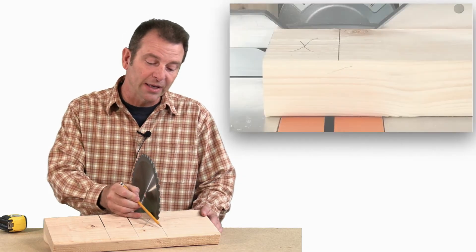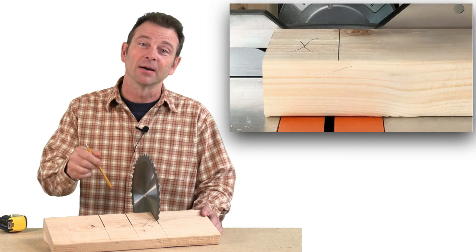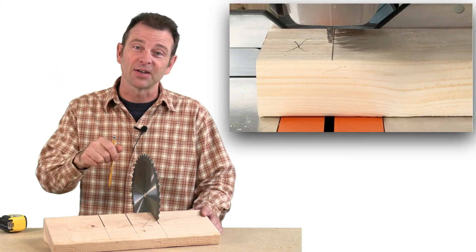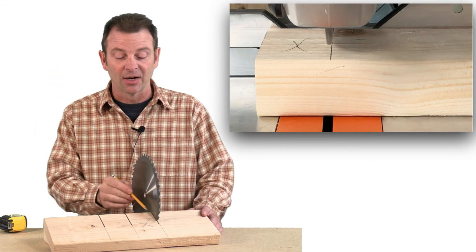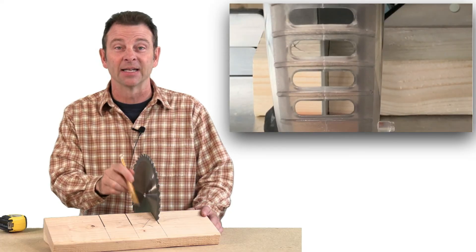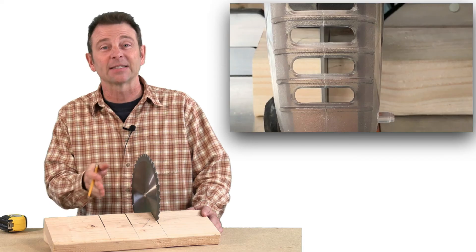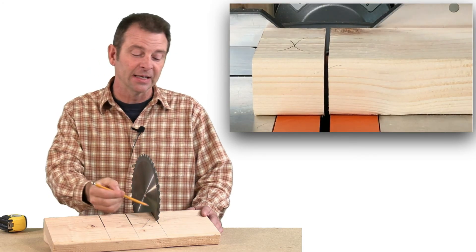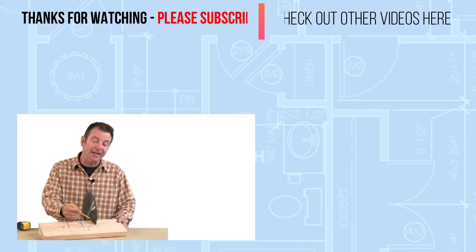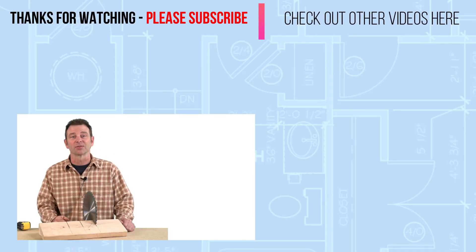So now when we go to put our piece of material on the saw and cut it we're going to align our blade always on the scrap side. If we move the blade on that side it's going to put the kerf on that side and now we can get our accurate cut right on our scribe line.